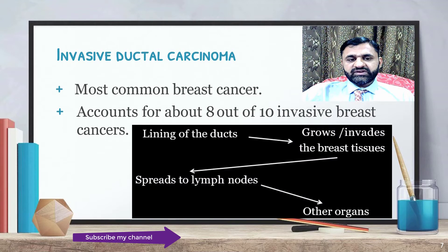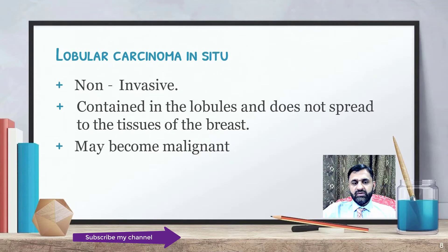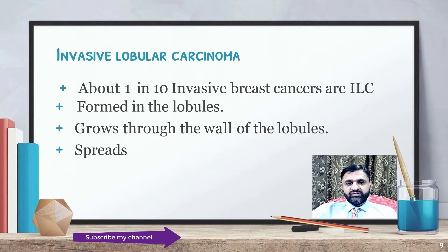Invasive ductal carcinoma is the most common breast cancer, accounting for 8 out of 10 invasive cases. It arises from the lining of the ducts, grows and invades breast tissues, spreads to lymph nodes, and may spread to other organs. Lobular carcinoma in-situ is non-invasive, contained in lobules, and does not spread into breast tissue, though it may become malignant. About 1 in 10 invasive breast cancers are invasive lobular carcinoma, formed in the lobules and spreading through their walls.